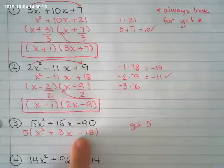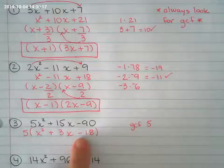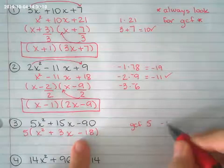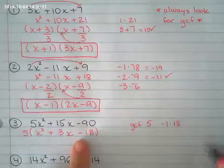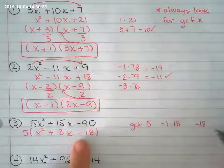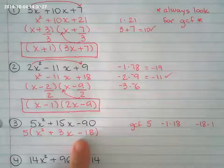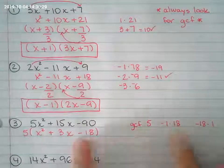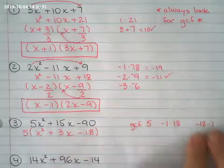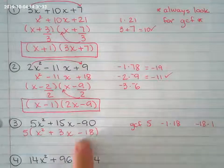negative 18, that means the signs are different. So, negative 1 times 18. Oh, it could be negative 18 times 1. That's always an option. These two multiply, will give you negative 18. These two multiply, give you negative 18.